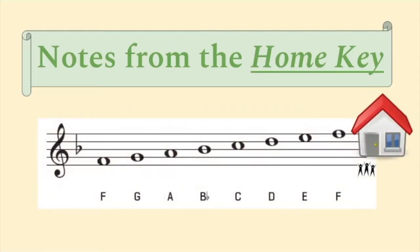For example, F major diatonic chords will only contain notes from the F major scale: F, G, A, B flat, C, D, and E.